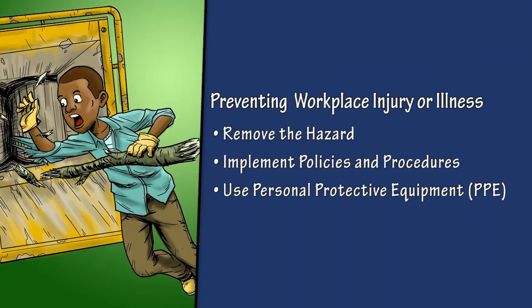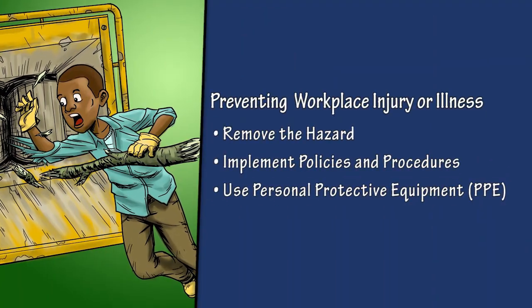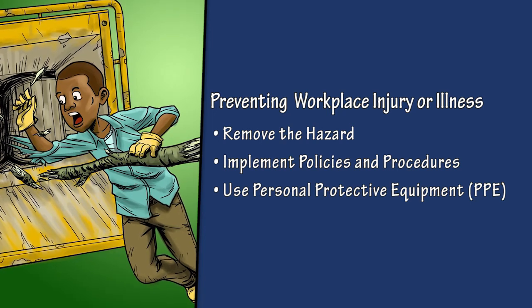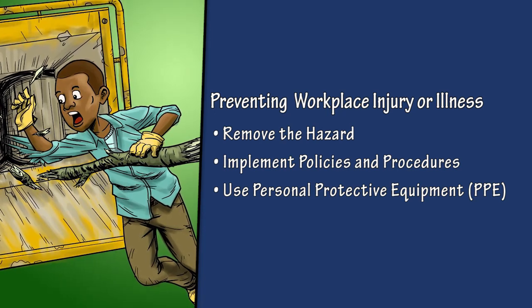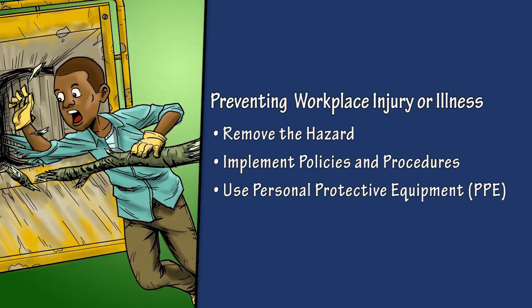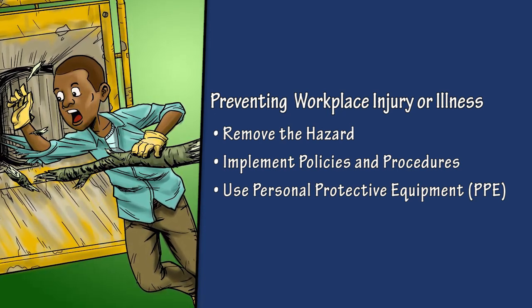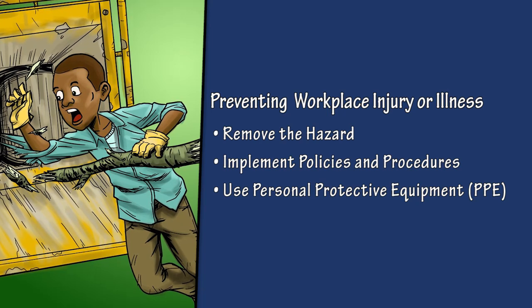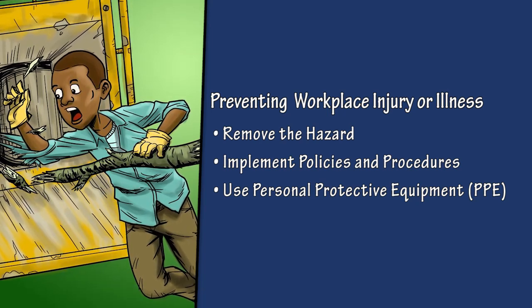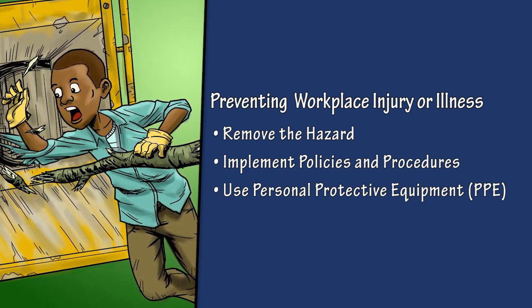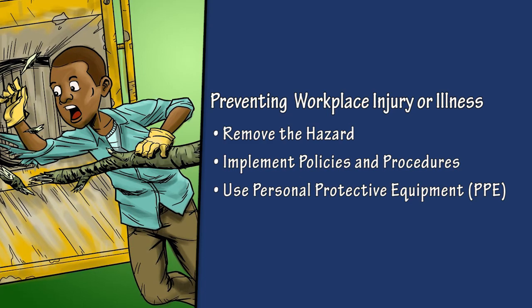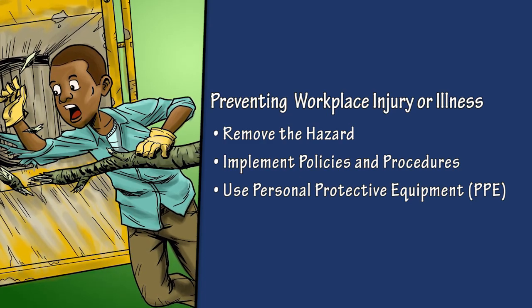The best way to prevent a workplace injury or illness is to remove the hazard. If this can't be done, then hazards can be controlled through work policies and procedures, or the use of PPE — personal protective equipment — such as a respirator, or hearing or eye protection.